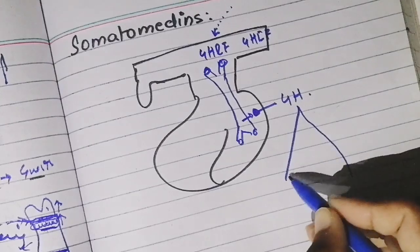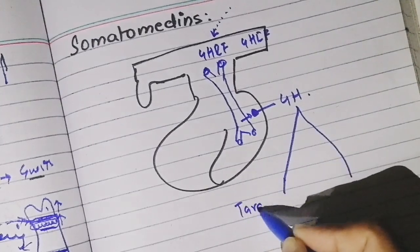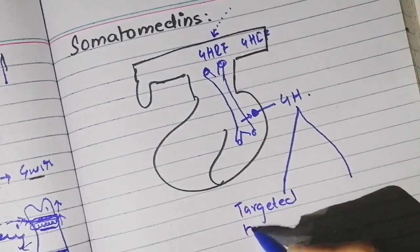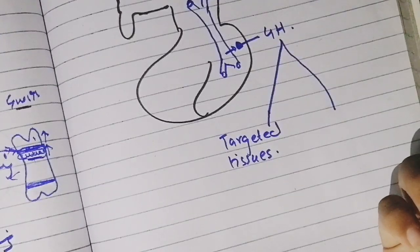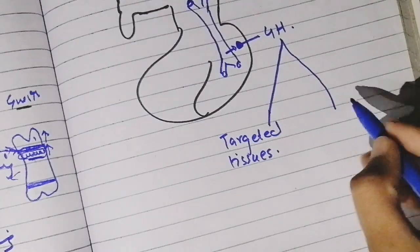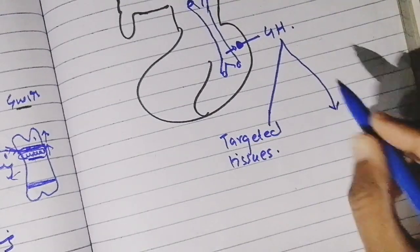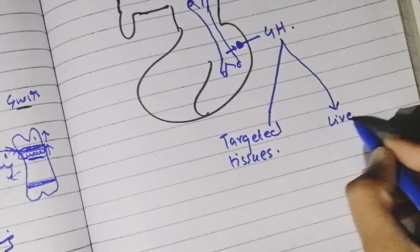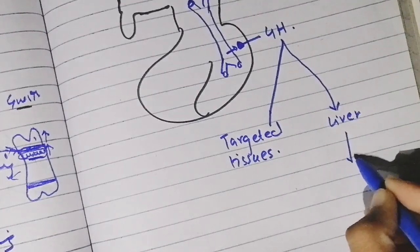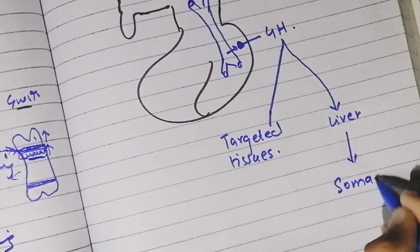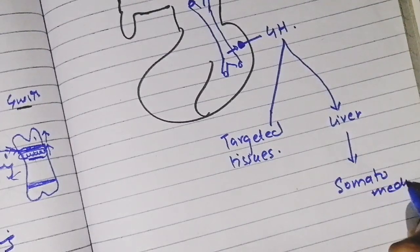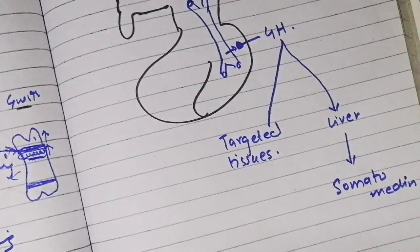Growth hormone works in two ways. One is that growth hormone goes to different targeted tissues and performs different functions there, such as protein synthesis, lipolysis, and carbohydrate reserve. The other is that growth hormone goes to the liver, where it is converted into a factor which we call somatomedins.